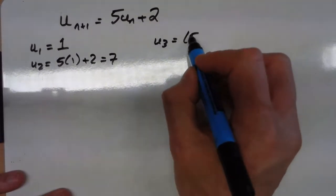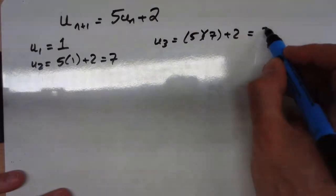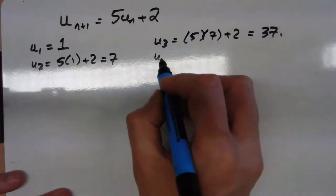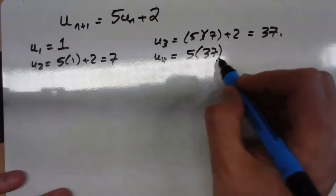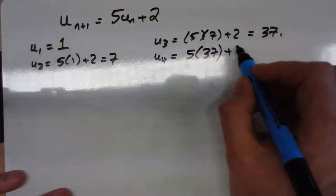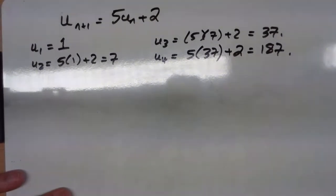The third one will be 5 lots of 7 add 2, so that makes 37. Do we have to go any further? Yeah, we've got to do another one as well. And the fourth one is 5 lots of 37 add 2, which is 187. So the sequence works like that.